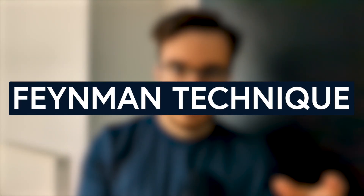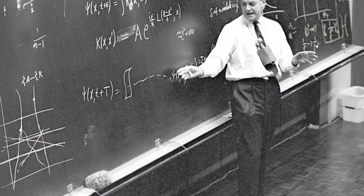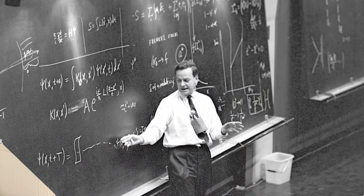If you cannot explain something in your own words, then you don't truly understand it. That's the central principle behind the Feynman technique, a method used by the brilliant scientist Richard Feynman to not only remember more of what he learned and read, but to truly understand it and integrate it into his mind. In the case of our reading, the best way to apply that is to explain what we read in our own words.